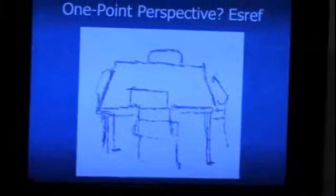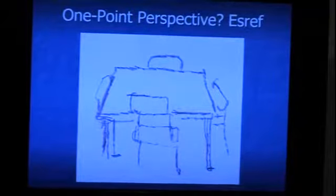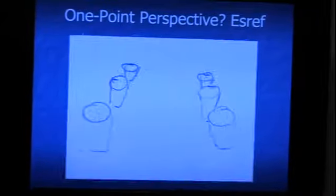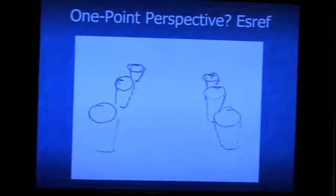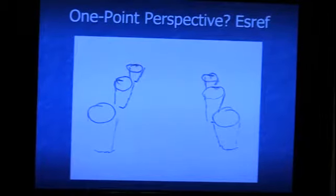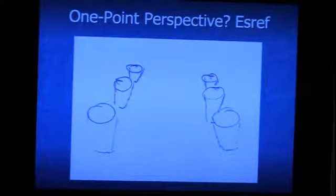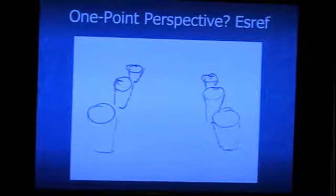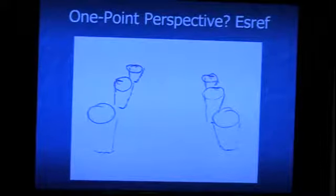I asked Eshref from Turkey to draw a table with four chairs around it. This is actually a very good drawing — very few sighted people can achieve this level. And this is six glasses in two rows of three, marching across the table. When he draws the further ones, he makes them smaller, makes the tops of the glasses more elliptical, and shows overlap of the further ones by the middle ones. This is a really quite good little drawing. I would like to have a T-shirt with that drawing.